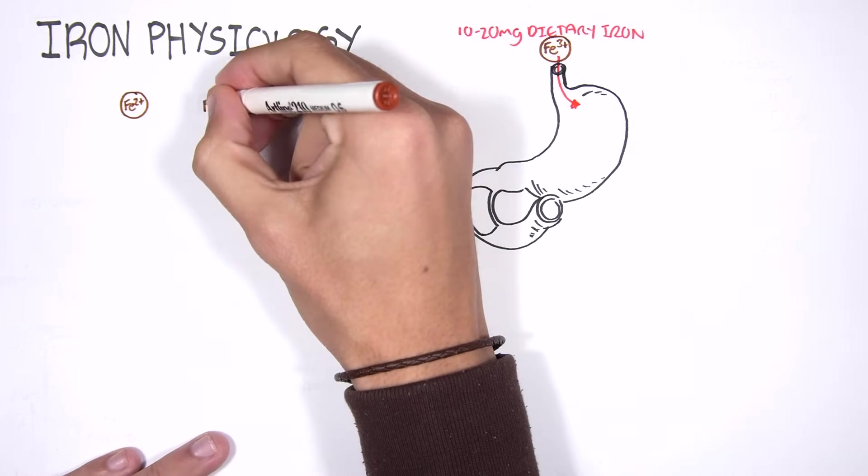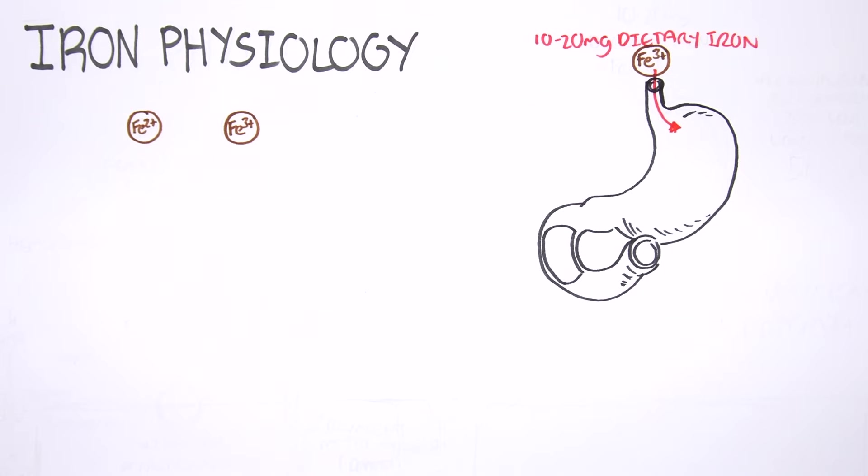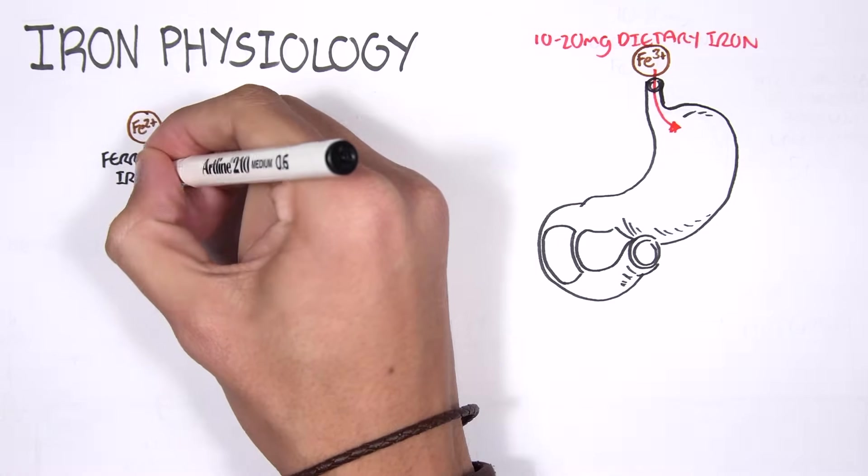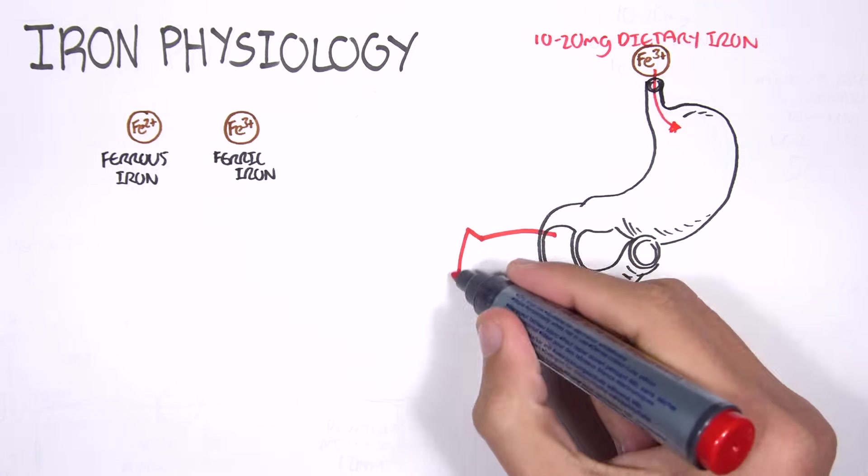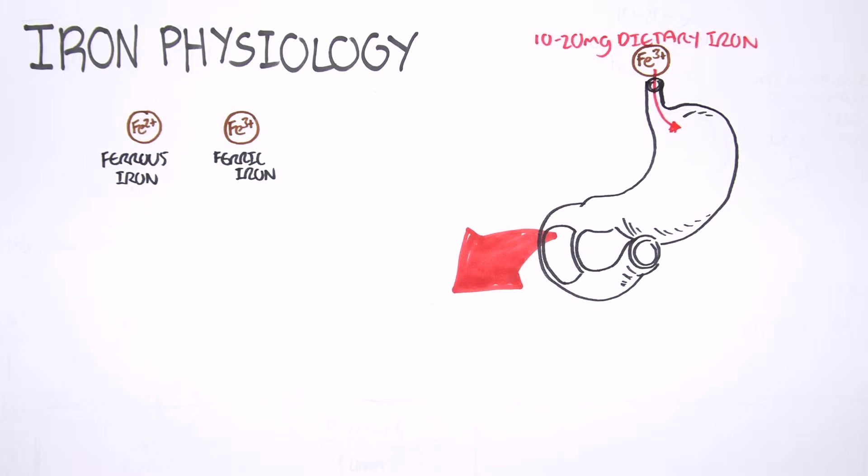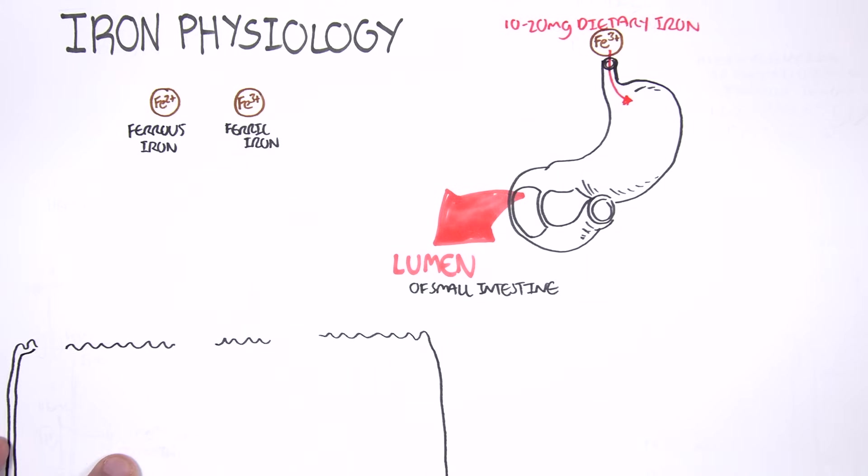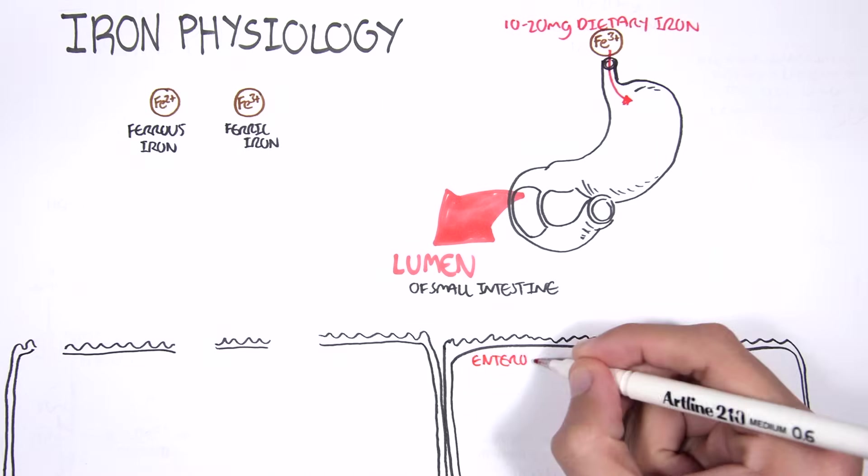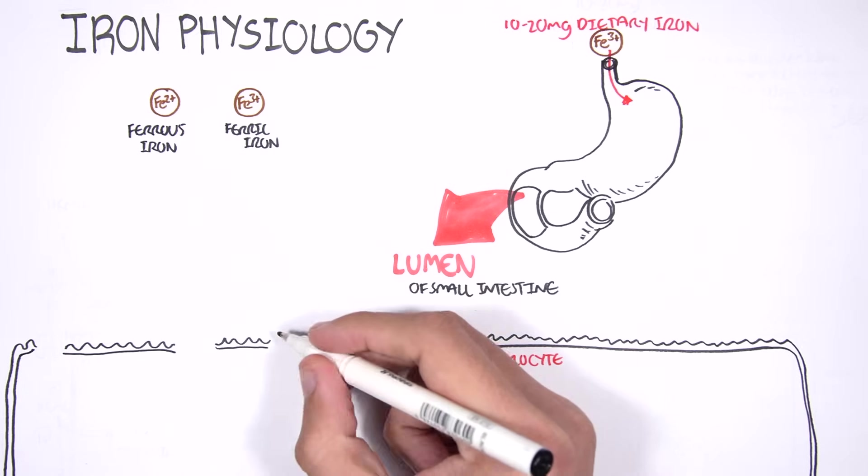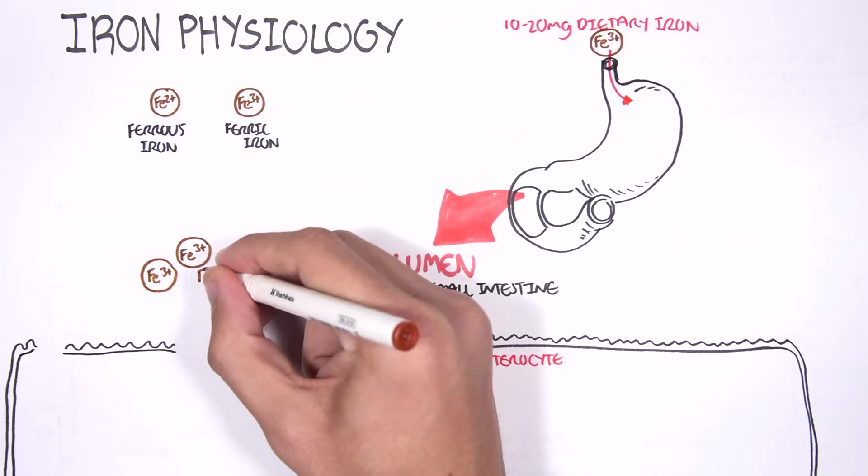Before we continue on, we have to know that in our bodies we have two main forms of iron. We have the ferrous iron, Fe2+, and the oxidized iron, ferric iron, Fe3+. Let's go back to the small intestine here and zoom in. So here we have the lumen of the small intestine. And here I'm drawing the intestinal cells, known as enterocytes. So iron travels through the stomach and arrives in the lumen of the small intestine. It's in a Fe3+ form, a ferric iron form, because this is usually the form it comes in when we consume iron.